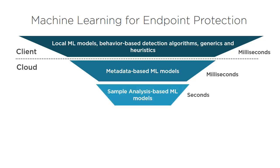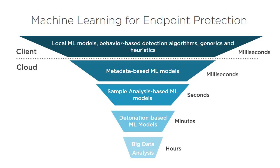If the cloud requests a sample, then sample analysis-based machine learning models are used in the cloud, which might take seconds. In certain scenarios, detonation-based machine learning models can be involved, which might take minutes, and big data analysis can take up to hours. What this means is that the client will not wait for minutes and hours. If the file is infected and the cloud could not determine it is bad within seconds, then the client will allow the file to run. In the background, the cloud will continue working — doing detonation-based ML models and big data analysis — so other clients can be notified and updated, although we lost patient zero in the process.